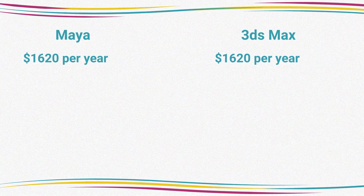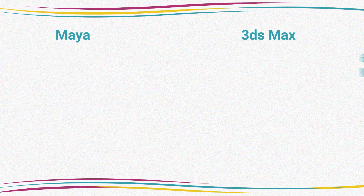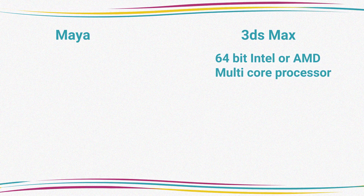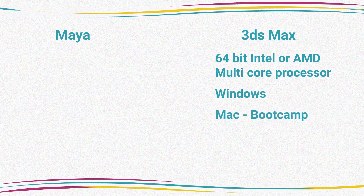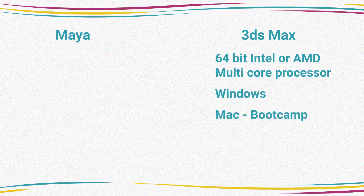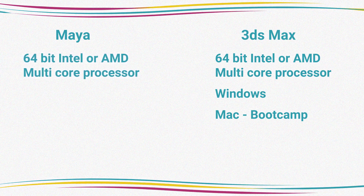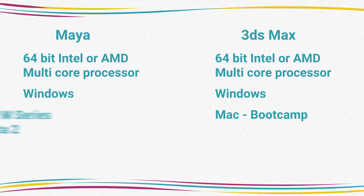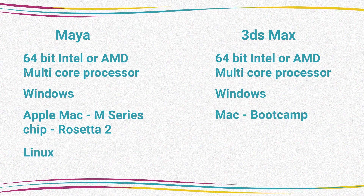Let's look at system requirements and price for 3ds Max and Maya. Both are currently $1,620 per year or $205 per month. In terms of CPUs, 3ds Max needs a 64-bit Intel or AMD multi-core processor and is for Windows users — although you can install it on a Mac with Bootcamp, they no longer provide support for troubleshooting for Apple Mac. Maya also requires a 64-bit Intel or AMD multi-core processor and is supported for Apple Macs with an M-Series chip under Rosetta 2 mode, and you can also use it on Linux.